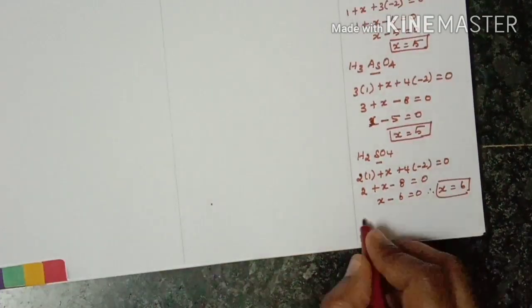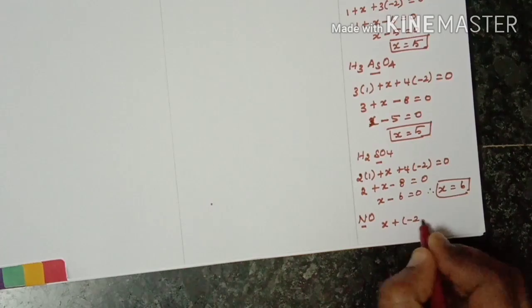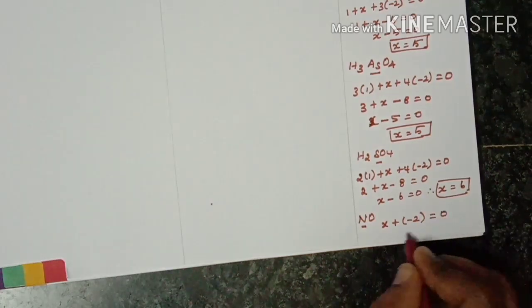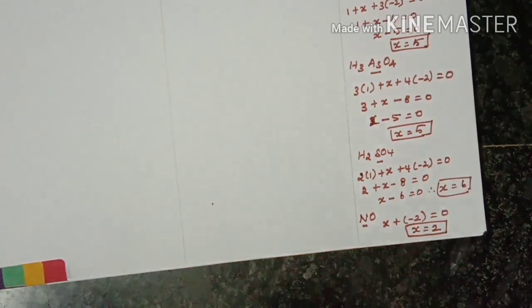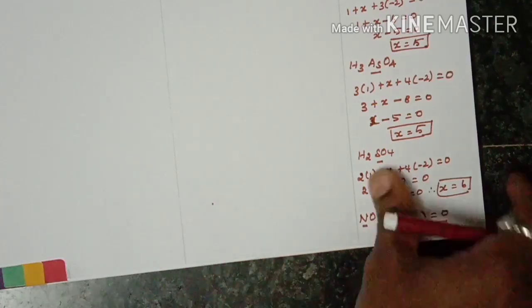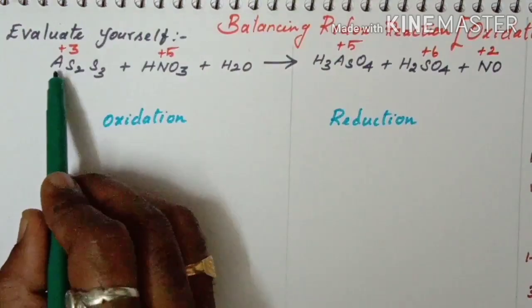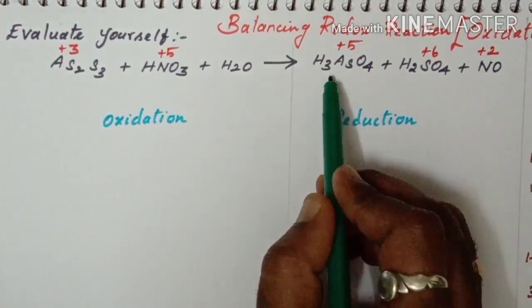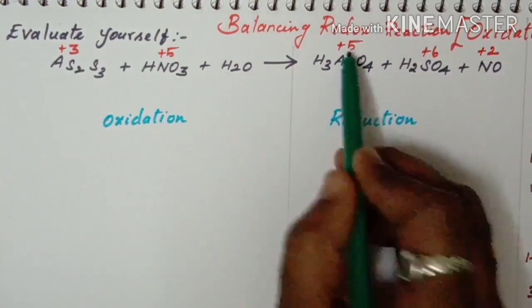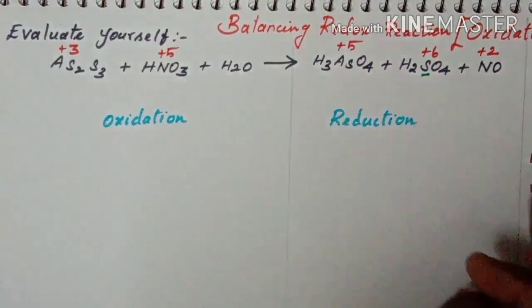For NO, the nitrogen oxidation number is plus 2. So summarizing: arsenic in AS2S3 is plus 3, nitrogen in HNO3 is plus 5, arsenic in arsenic acid is plus 5, sulfur in sulfuric acid is plus 6, and nitrogen in NO is plus 2.